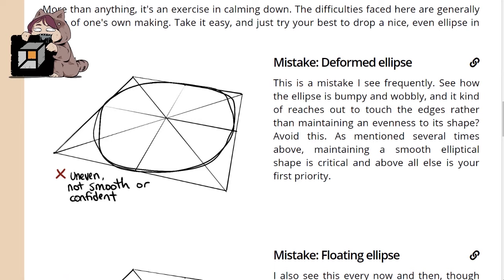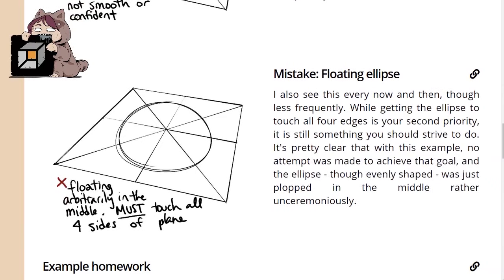Another mistake: Floating ellipse. I also see this every now and then, though less frequently. While getting the ellipse to touch all four edges is your second priority, it is still something you should strive to do. It's pretty clear that with this example, no attempt was made to achieve that goal and the ellipse, though evenly shaped, was just plopped in the middle rather unceremoniously.